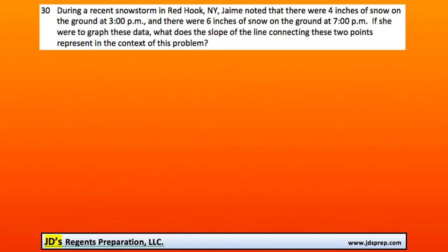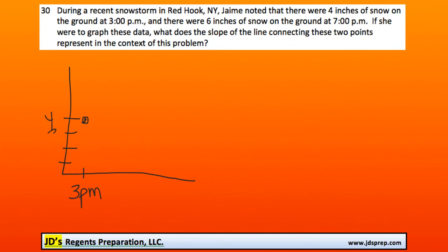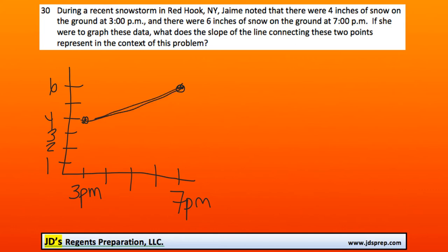A good starting point would be to draw a rough graph to help us visualize what's going on. We know at 3 p.m. there are four inches of snow, so we plot that point. Then going along to 4 p.m., 5 p.m., 6 p.m., and here's 7 p.m. — at 7 p.m. there are six inches of snow. So here's what a graph would look like.